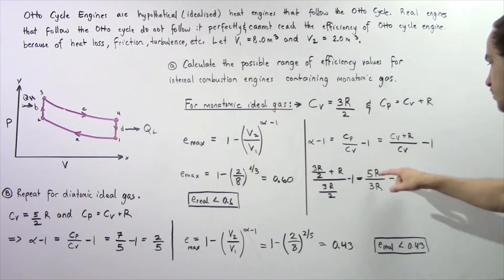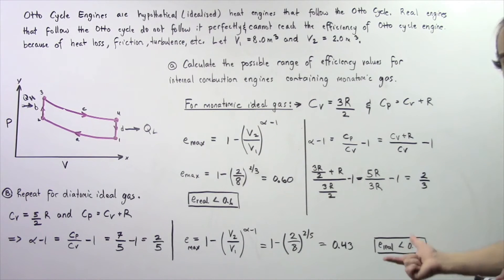So we combine these terms and we get 5R divided by 3R minus 1. Notice the R's will cancel and we're left with 5 thirds minus 1 and that is equal to 2 thirds.